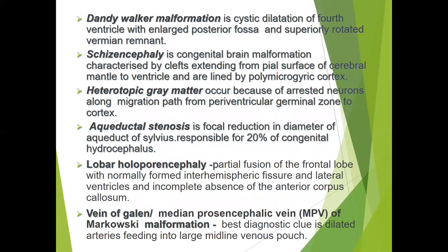Dandy-Walker malformation is the cystic dilatation of the fourth ventricle with an enlarged posterior fossa and superiorly rotated vermian remnant. Schizencephaly is a congenital brain malformation characterized by a cleft extending from the pial surface of the cerebral cortex to the ventricle, lined by polymicrogyric cortex. Heterotopic gray matter occurs because of arrested neuron migration along the path from the periventricular germinal zone to the cortex. Aqueductal stenosis is the focal reduction in the diameter of the aqueduct of Sylvius, responsible for 20% of congenital hydrocephalus. Lobar holoprosencephaly shows partial fusion of the frontal lobes with a normally formed interhemispheric fissure and lateral ventricles, and incomplete absence of the anterior corpus callosum. Vein of Galen malformation is a dilated vascular structure feeding into a large midline venous pouch.